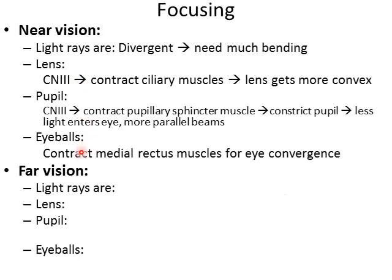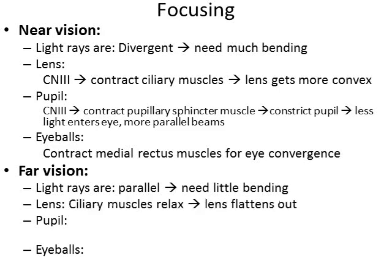Then the eyeballs are going to converge — we contract the medial recti muscles via the oculomotor nerve, moving them into a cross-eyed pattern to keep light focused on the fovea centralis. For far vision, it's the exact opposite. The light rays that make it to the eyeball are much more parallel, so they don't need as much bending. The lens allows the ciliary muscles to relax, which tightens the suspensory ligaments and causes the lens to flatten out and become less convex.